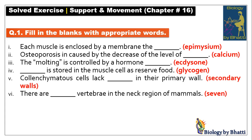Fill in the blank number two: osteoporosis is caused by the decrease in calcium levels. Number three: molting is controlled by a hormone — ecdysis or molting is controlled by ecdysone.